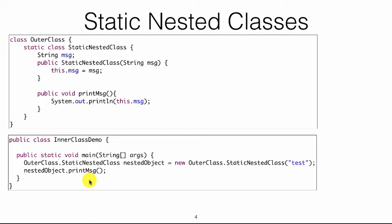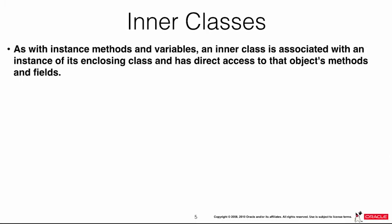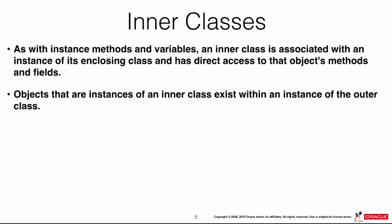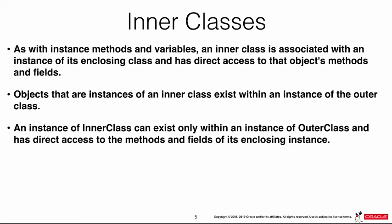Now, inner classes. Like inner methods and variables, an inner class is associated with an instance of the enclosing class and has direct access to its objects, methods, and fields. You can declare a class and inside it another class that is not static, meaning that inner class has access to all methods, attributes, and variables declared inside the outer class. Because of this, you must instantiate them in order — you have to instantiate the outer class first and then use it to instantiate the inner class.